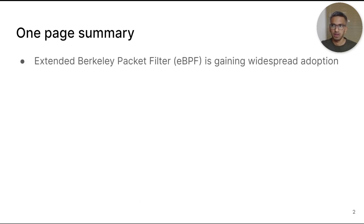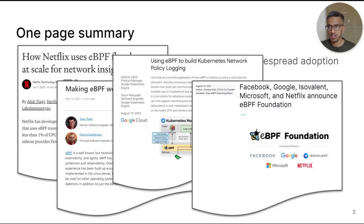EBPF or extended Berkeley packet filter is a recent technology that is gaining widespread adoption. Companies like Netflix, Facebook and Google use EBPF as a core part of their infrastructure. EBPF is especially useful in high performance networking, monitoring and security.